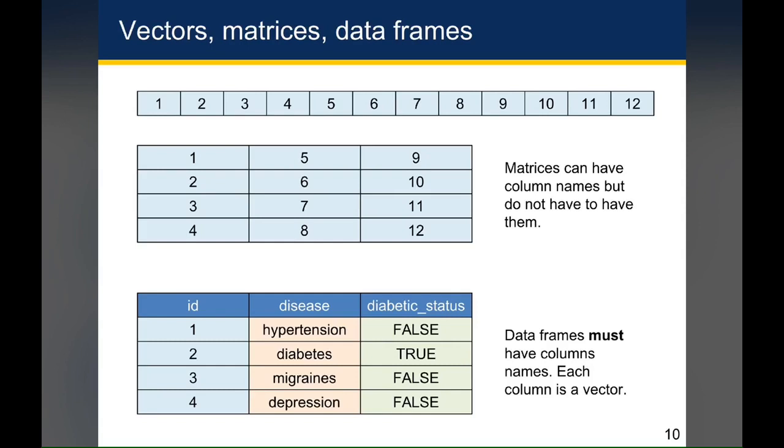A matrix is very similar to a vector in the sense that all the values of a matrix also have to be the same data type, except there is a two-dimensional structure to it. So you'll see something like this, where a matrix can have maybe three columns and four rows, but all of those have to be the same data type.